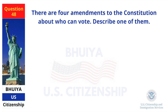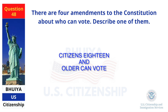There are four amendments to the Constitution about who can vote. Describe one of them. Citizens 18 and older can vote.